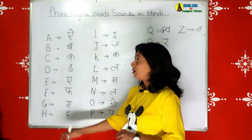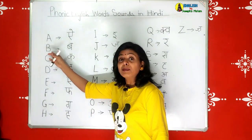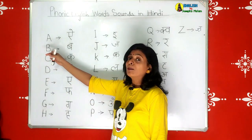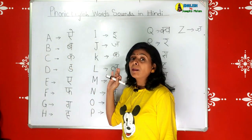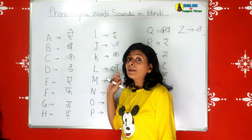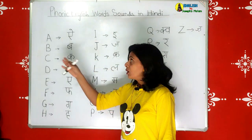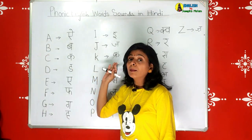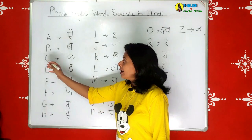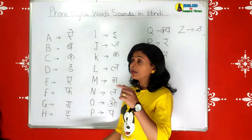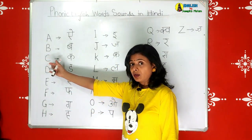Next we have the alphabet B. B stands for ball. The Hindi phonic sound is 'bah'. Some of you say 'ball' incorrectly - it's 'bah bah bah'. The next is C. C stands for cat.